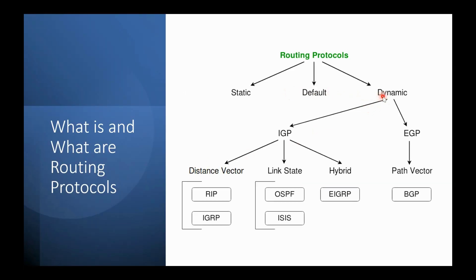Dynamic routing is an intelligent protocol. We only need to advertise our own connected router information, and through this mechanism other router information will be exchanged bi-directionally. All routers will become neighbors. Think of it like: I say my name, you say your name, and now we both know each other. The neighbor information is exchanged from Router A to Router B and back, establishing communication.